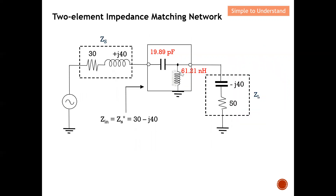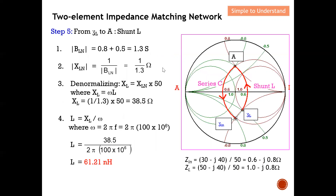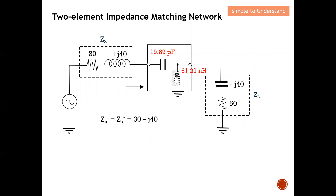With this, the two-element impedance matching network is fully designed: a series capacitor C = 19.89 pF and a shunt inductor L = 61.21 nH. I want to re-emphasize: Z_in is the complex conjugate of the source. So instead of plotting 30+j40, we plot Z_in = 30−j40 versus Z_L when performing the Smith chart matching design.